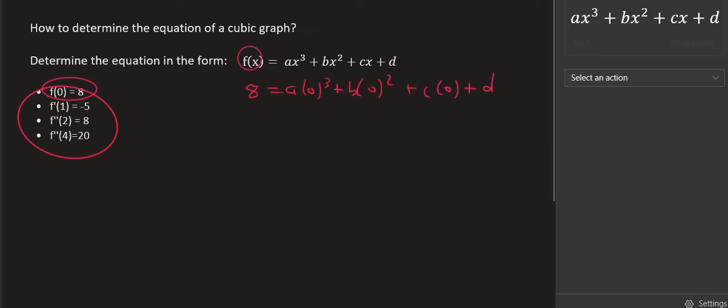Okay, so you see what I've done there? I've literally plugged in all the x's as 0 and I've made the answer equal to 8, and that part cancels and that part cancels. And so that allows us to find that d is 8. So we've already found one letter now.